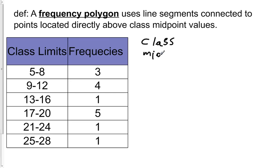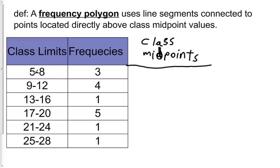In order to find those class midpoints, we're going to take the class limits for that class, add them together, and divide by two. We're basically going to find the arithmetic mean of the class limits. There are two class limits for each class. In the first class, the class limits are 5 and 8. So we find the arithmetic mean: 5 plus 8 equals 13, divided by 2, which is exactly 6.5.